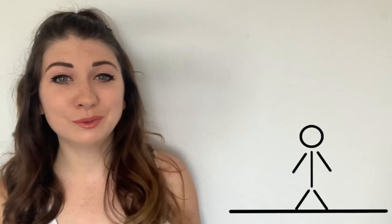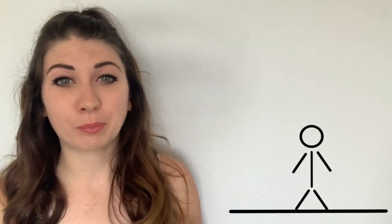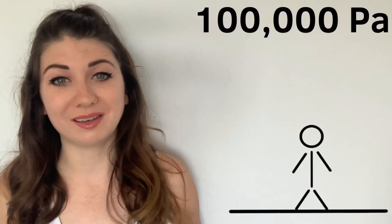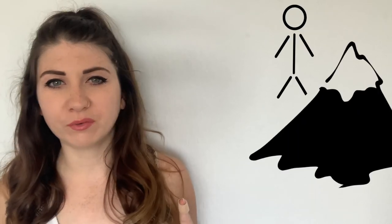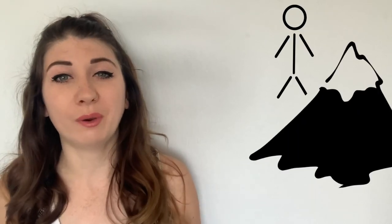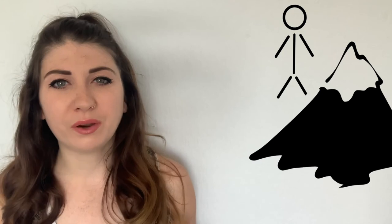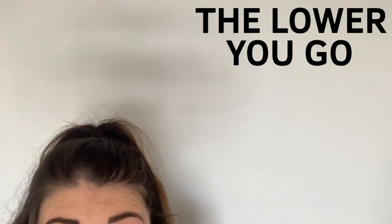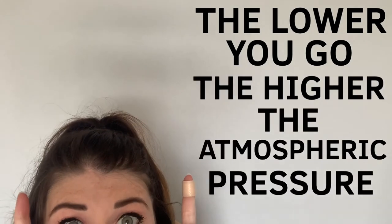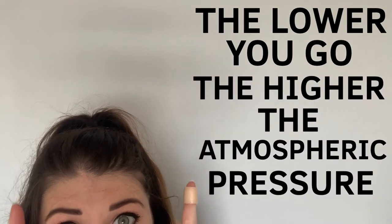For example, at sea level the atmospheric pressure is 100,000 pascals. But at the top of Mount Everest, which is about 8,800 meters high, the atmospheric pressure is only 33,000 pascals. So the lower you go, the higher the atmospheric pressure.